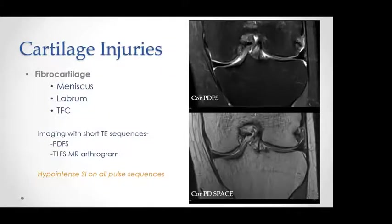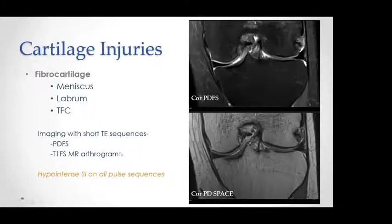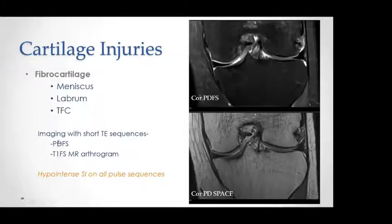Moving from hyaline cartilage to fibrocartilage, which is present in the menisci, the labrum, and the triangular fibrocartilage. All these structures appear homogeneously hypointense on all pulse sequences because they are fibrocartilage in origin. The best imaging technique for fibrocartilage is using MRI sequences with short TE — proton density and T1 sequences.